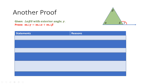A proof always begins with what's been given. So we've just repeated the given statement written at the top of the proof in green. We're given this very general triangle, alpha, beta, delta, and we're also given an exterior angle gamma, which is the angle formed by extending the bottom side of the triangle.